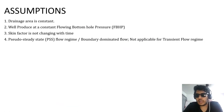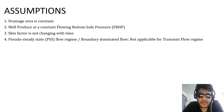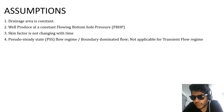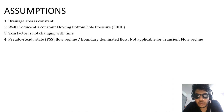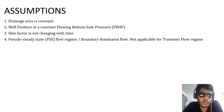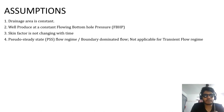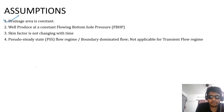Coming to the assumptions: while performing Decline Curve Analysis we take into consideration four assumptions. This can be a very important question for GATE — questions may be asked about what are the assumptions of Decline Curve Analysis. According to me these are the four assumptions. First point: drainage area is constant. As we all know, every well has some drainage area around it.